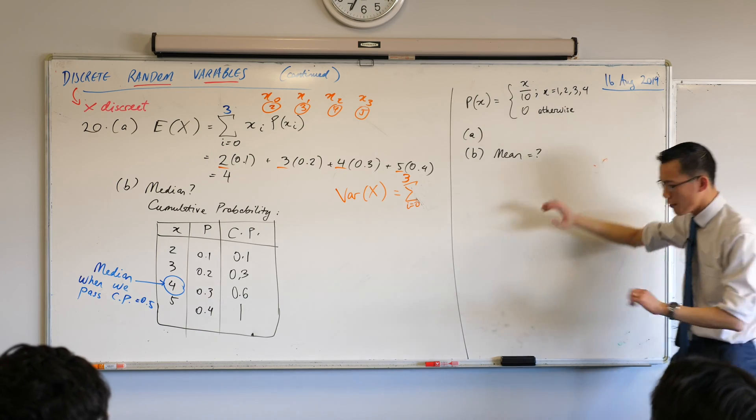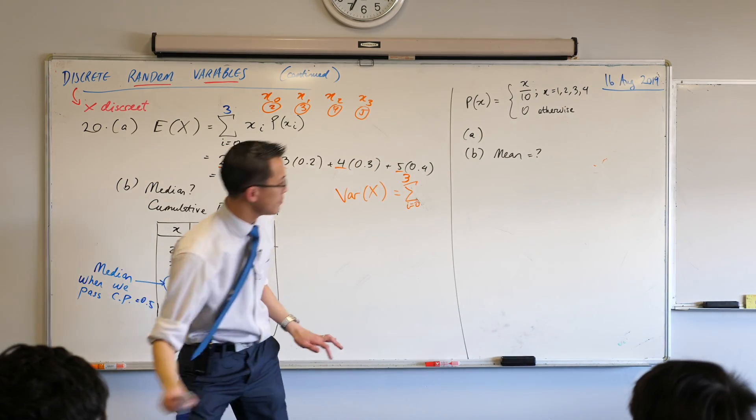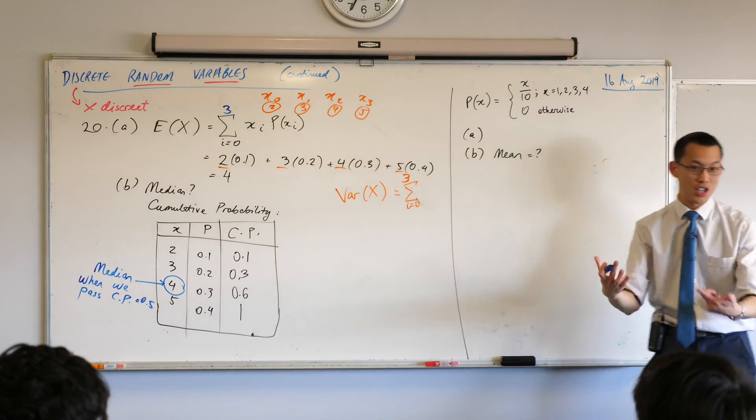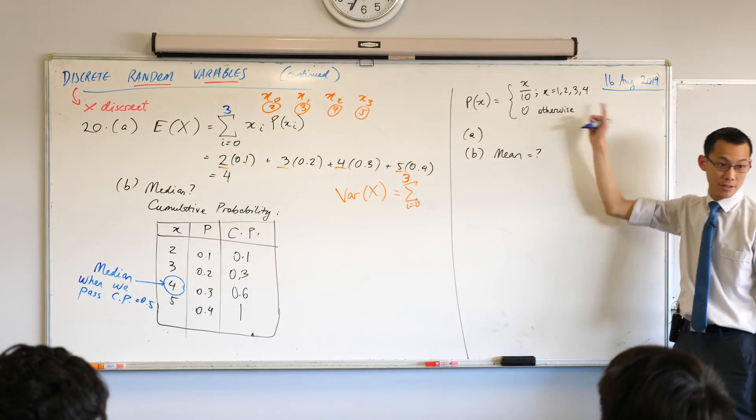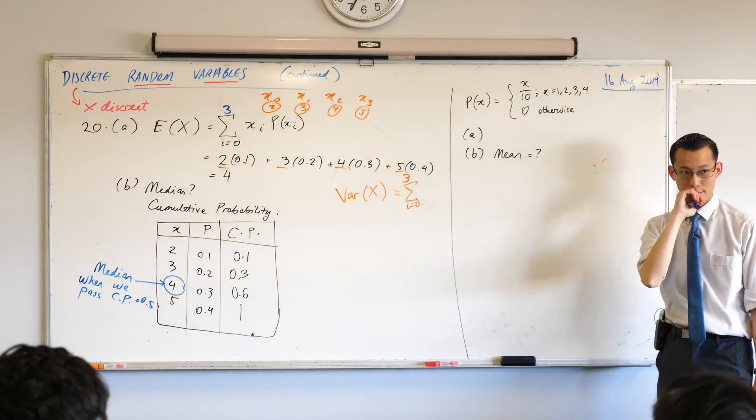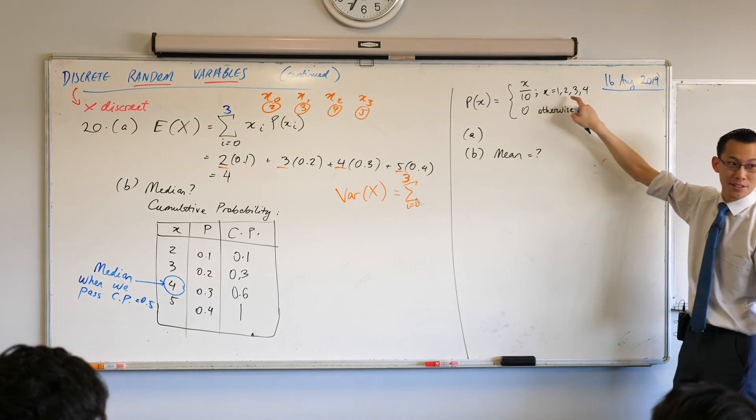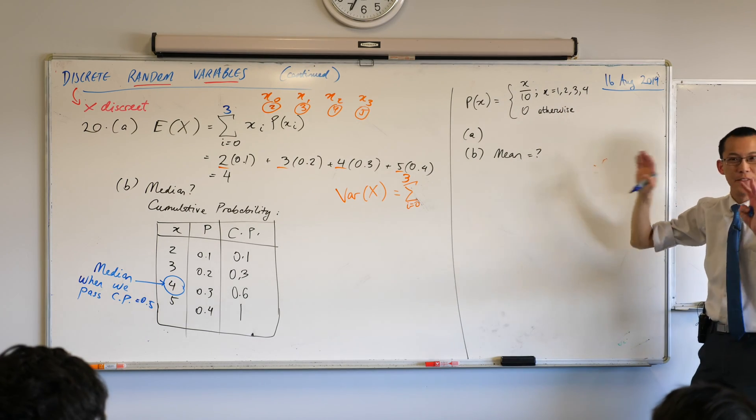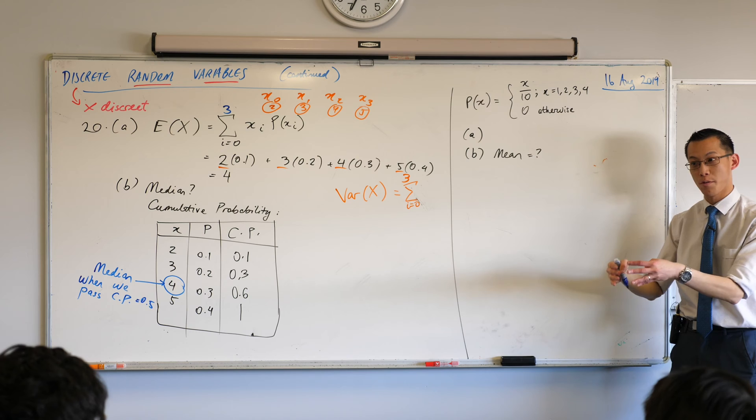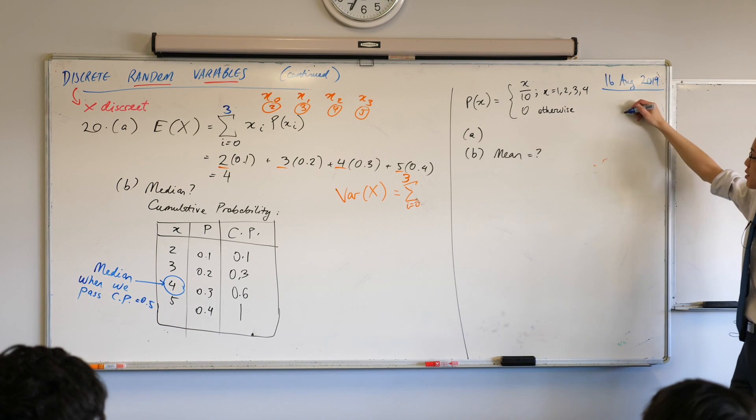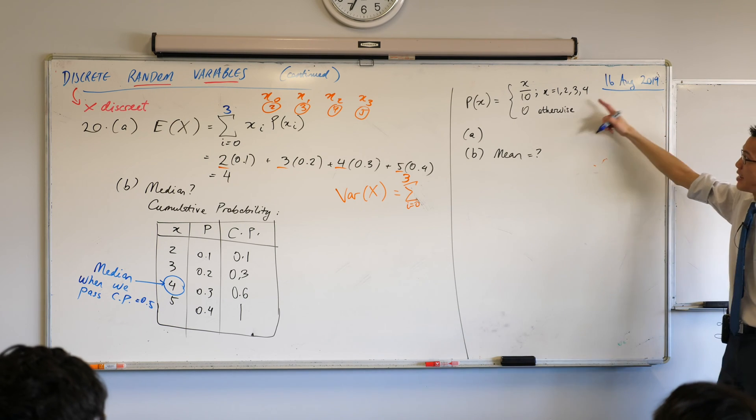Now, what that means is, if—just imagine with me, right? Imagine we had, what's the simplest, the smallest number of people that you can imagine fitting this? Think about it. You've got a probability of a tenth, two tenths, two tenths. Ten people, right? If you had ten people, that's the smallest group of people that could fit this. So, of those ten people, how many got a score of one?